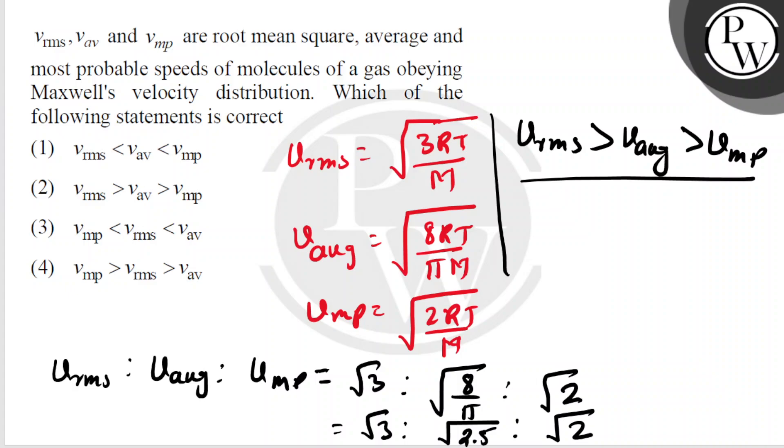Now let's check the options. In this one, vrms is the least, no. In option 2, vrms is greatest, then vaverage, then vmost probable, yes it is the correct option. In remaining options, vaverage is greatest, no. The correct option is option number two. I hope you got the solution, best of life.